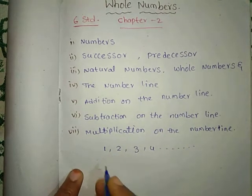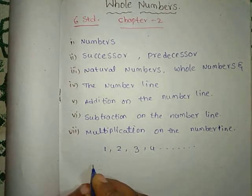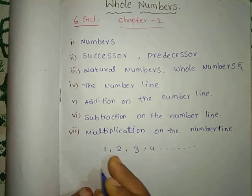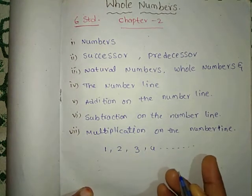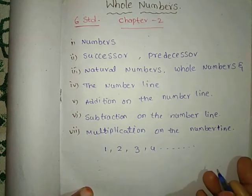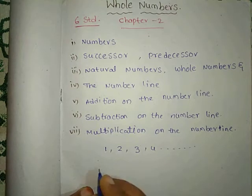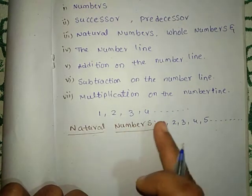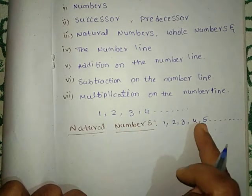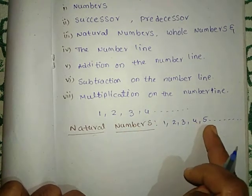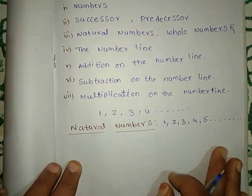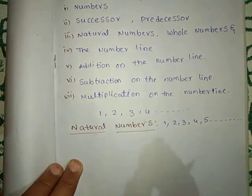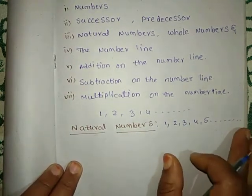Natural numbers are 1, 2, 3, 4, 5, 6, and so on, up to infinity. There is no ending to natural numbers.